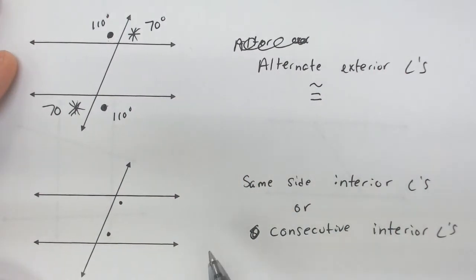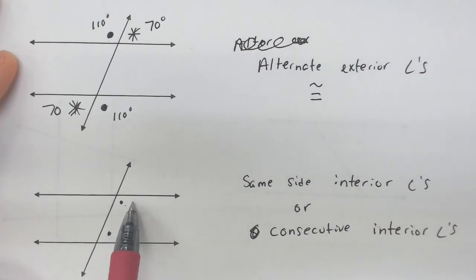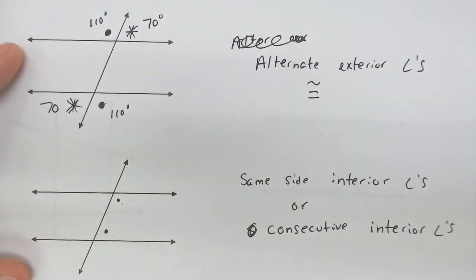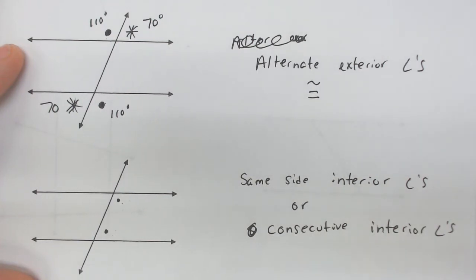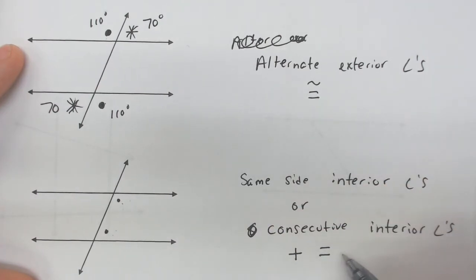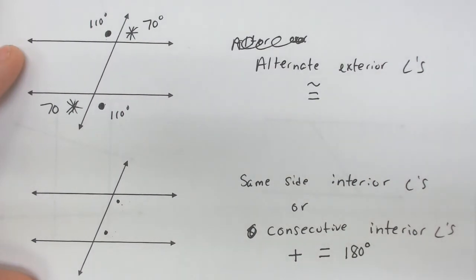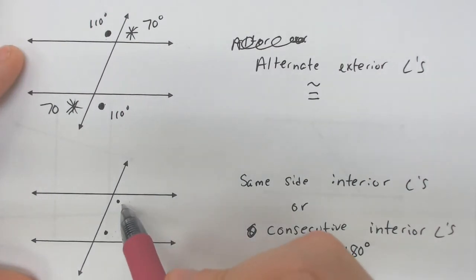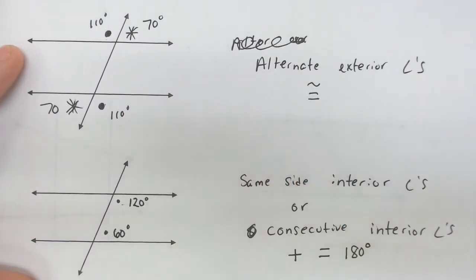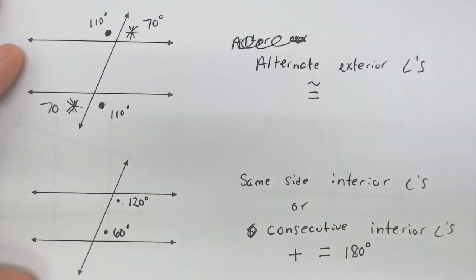Our last one is known by two different names — same-side interior, or consecutive interior angles. I like same-side interior because they're on the same side of the transversal and both on the inside of the parallel sandwich. These do not equal each other — they're the only pair we'll talk about that won't be equal. Instead, they add to equal 180 degrees. So if this part was 60, the top part would have to be 120.